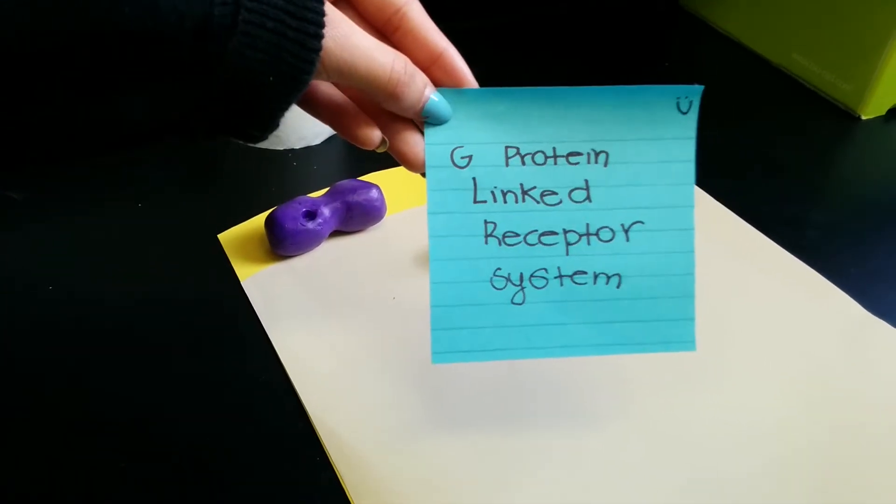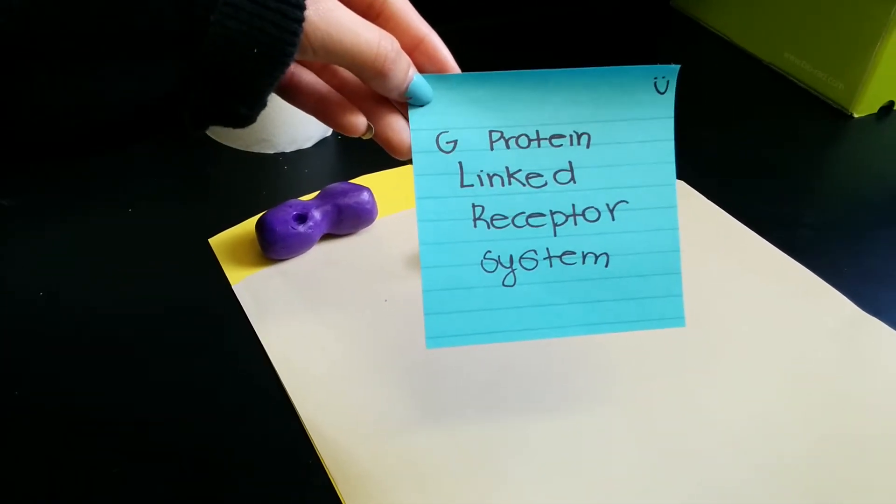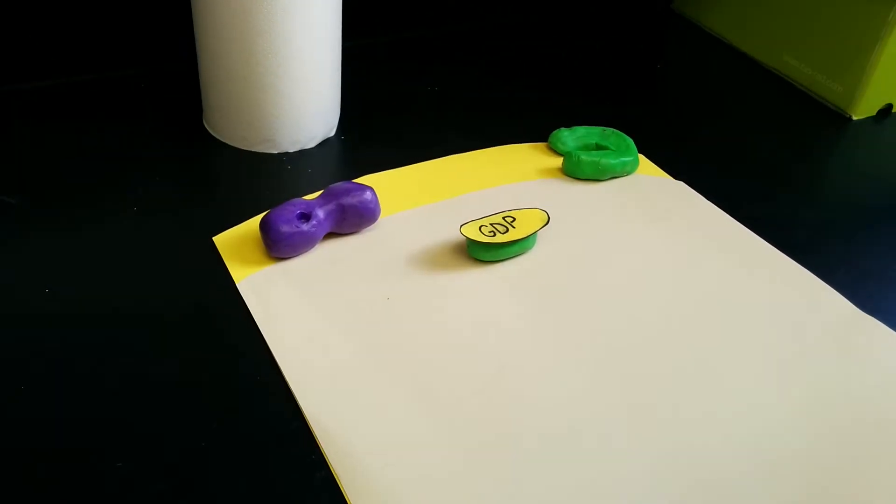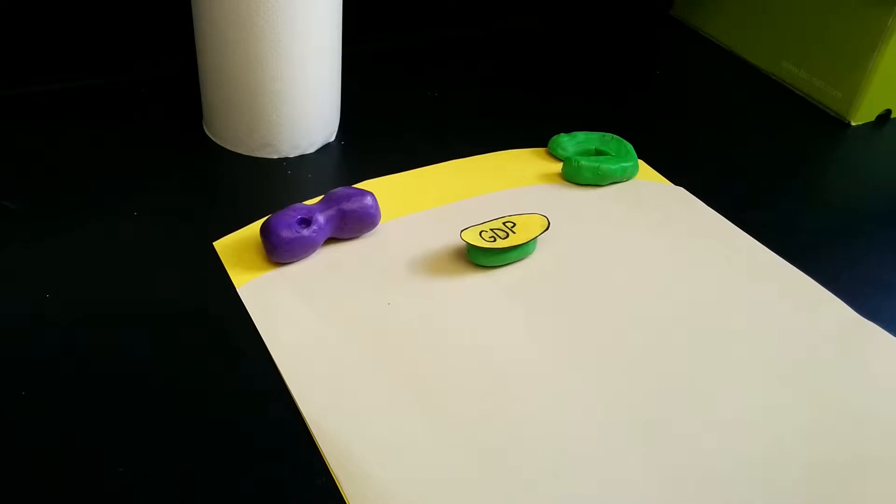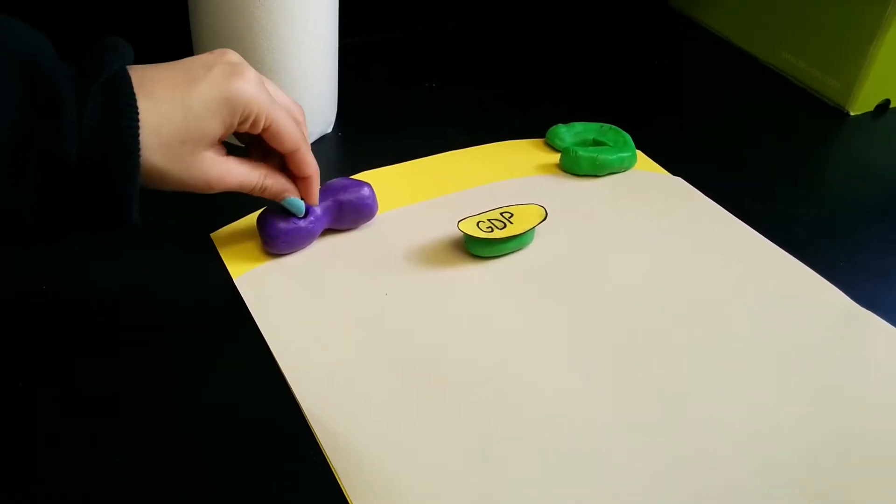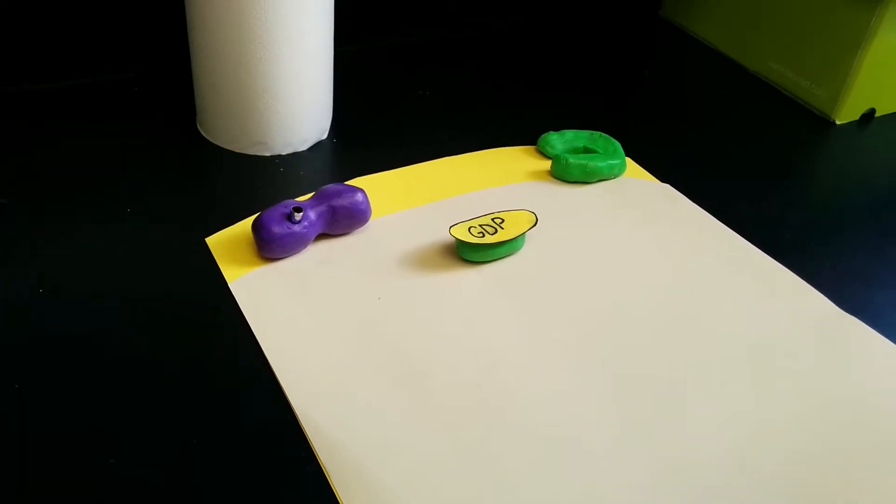Today we are going to be talking about the G-protein-linked receptor system. This process in cells usually starts out when a signal protein binds to the receptor in the cell's membrane.